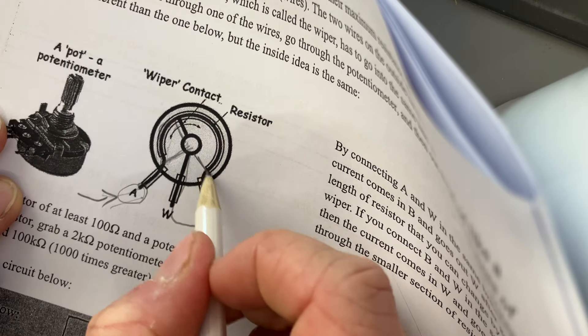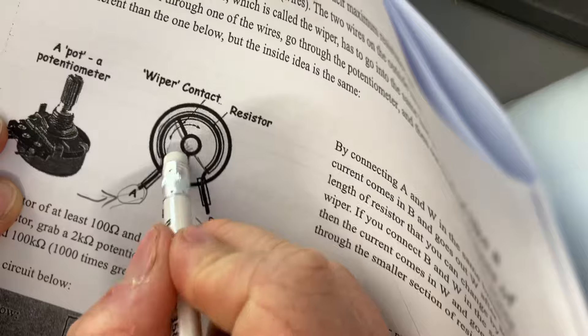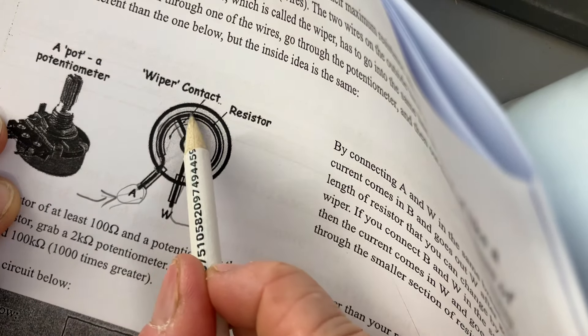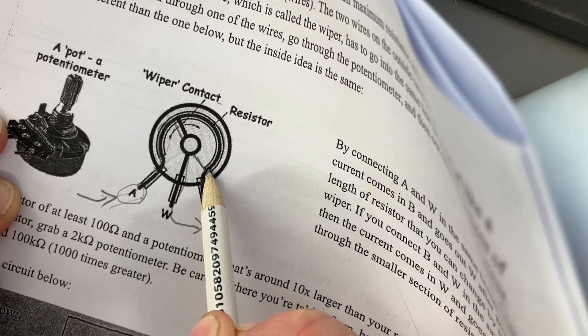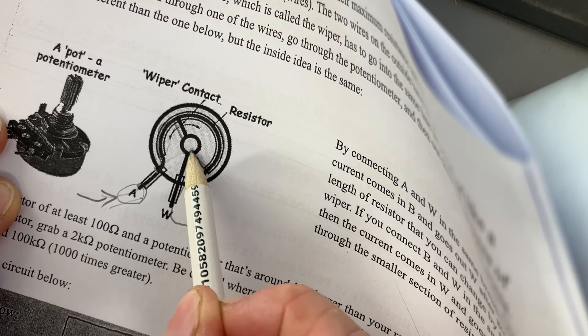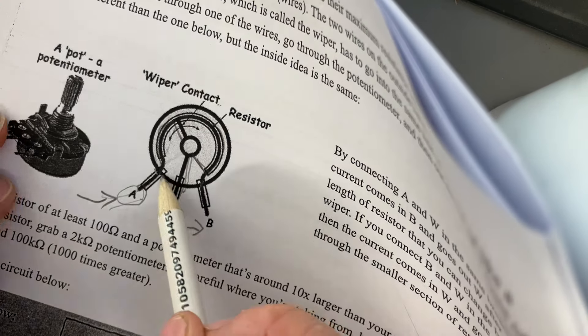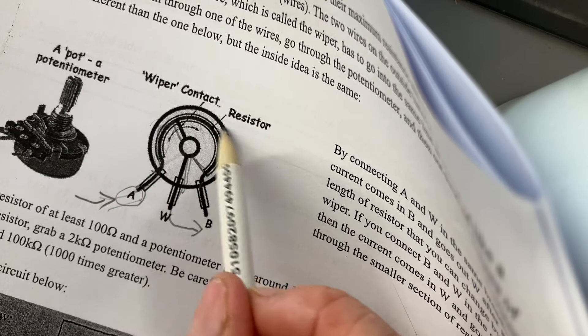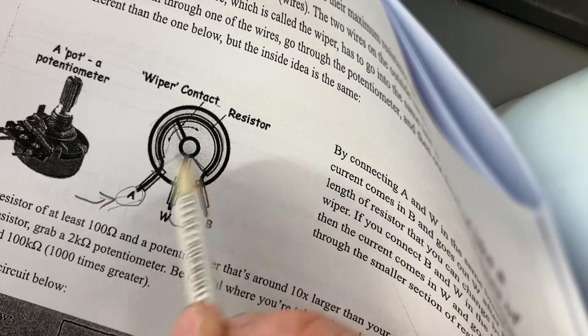Or I could go all the way over on this side so that it comes in through A, goes around the entire resistor, which would be 10,000 ohms of resistance, before leaving out the wiper. So I can vary from 0 to 10,000 ohms of resistance, or 0 to whatever the maximum resistance is for this potentiometer.